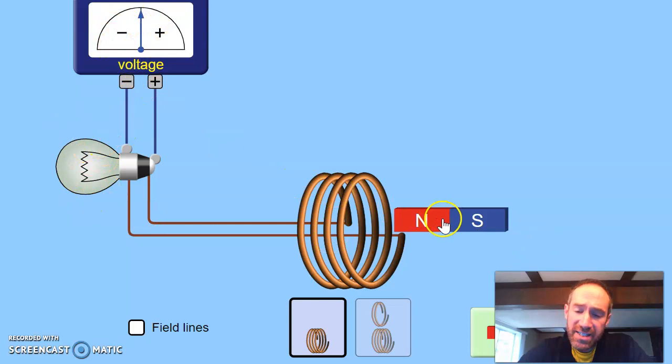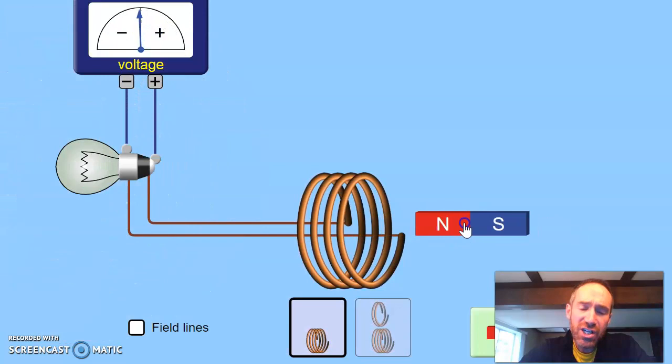But if I take the magnet and I move it, that is, I can change how much field is going through this area. That is, how much flux is going through that area. Is there flux there right now? Yes, but there's no changing flux. And so you can see, you're getting a lot of nothing.